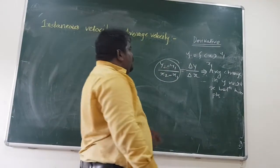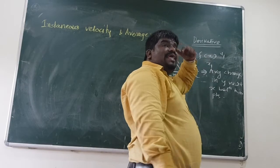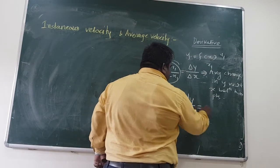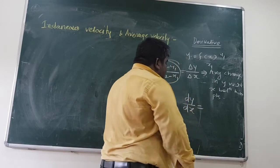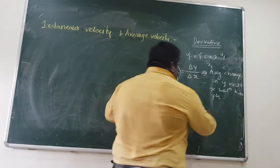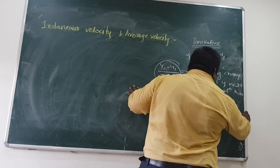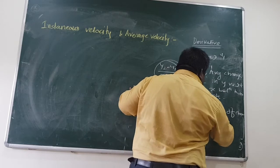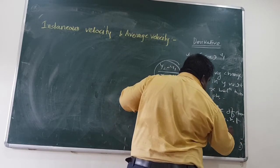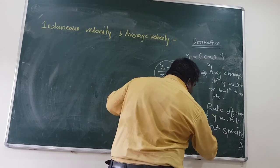If I want to find out how y is changing with respect to x at a particular value of x only — say x1 — then that is given by dy by dx. So dy by dx, the derivative of y with respect to x, gives rate of change of y with respect to x at a specific value of x.